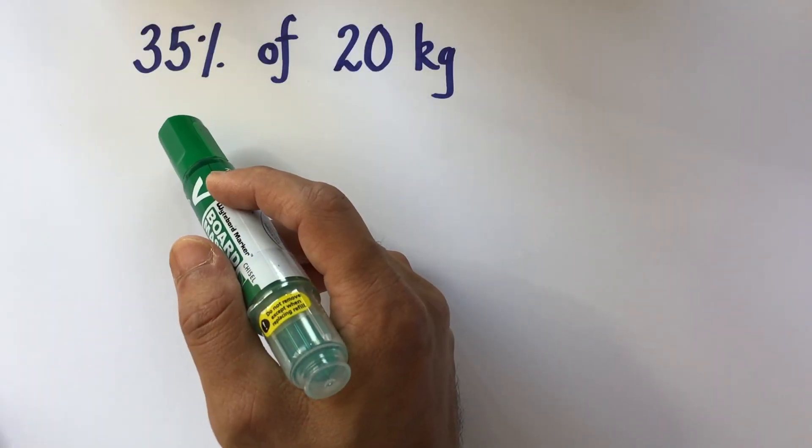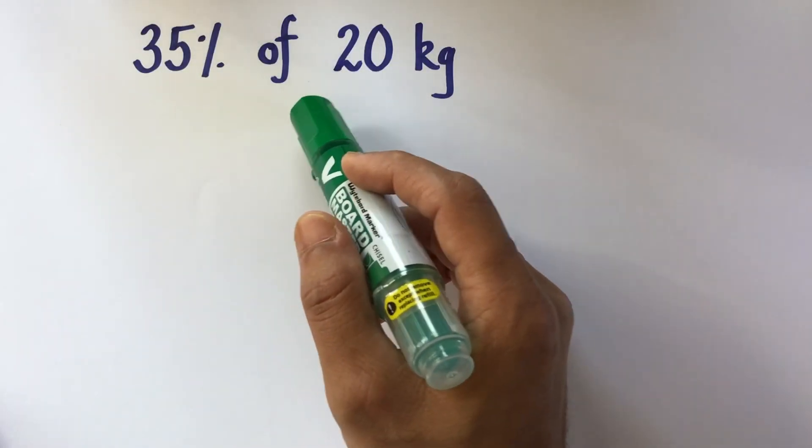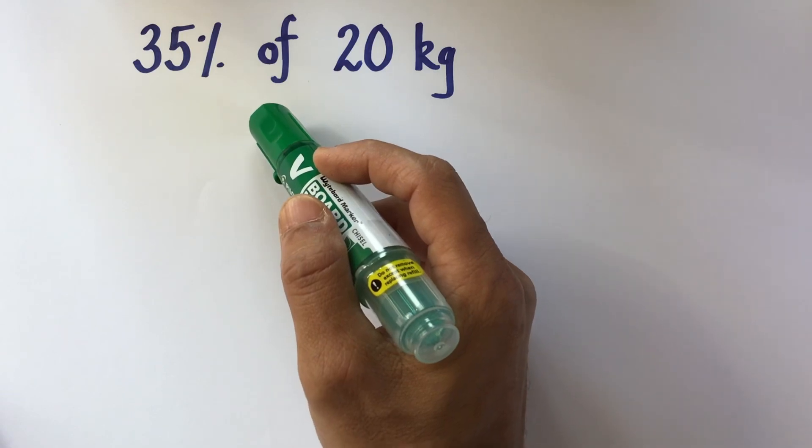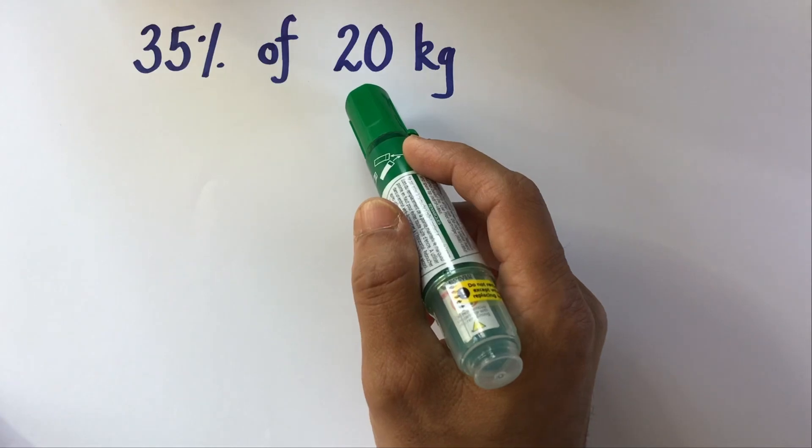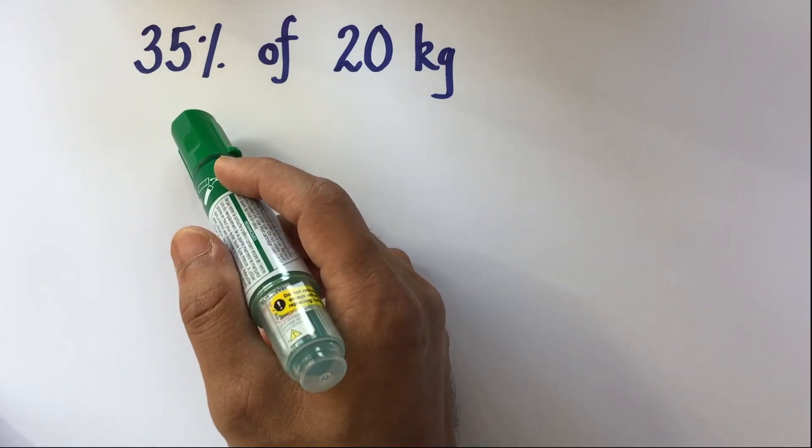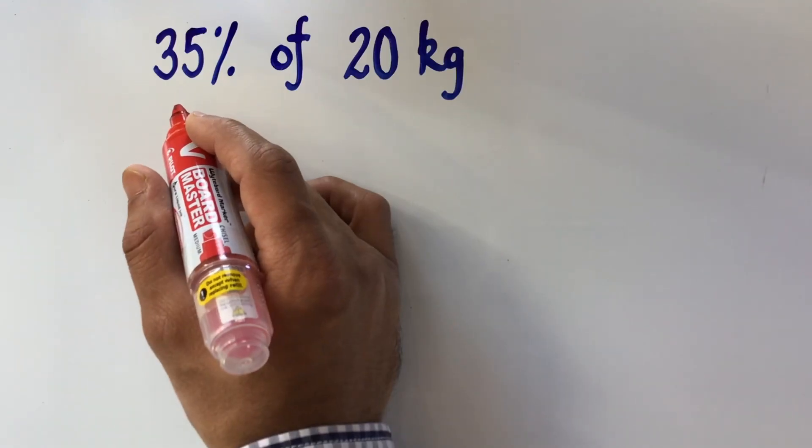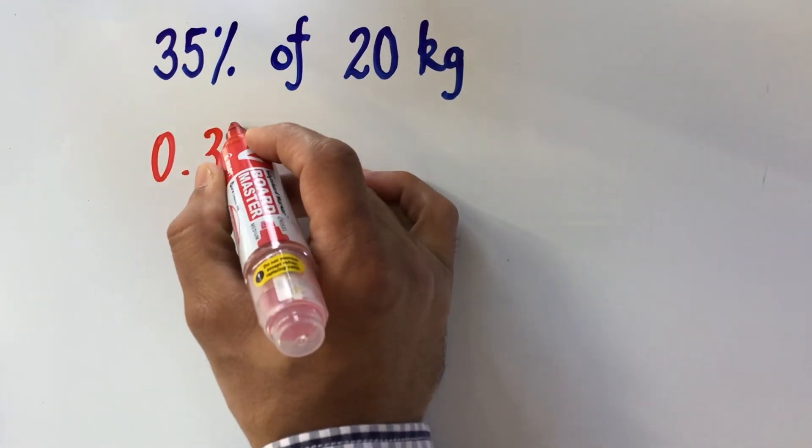Let us start with this example where we need to find 35% of 20 kgs. We need to remind ourselves that of means multiplication. Now to find 35% of 20 kg, we will first convert 35% into a decimal. When we convert 35% into a decimal, we get 0.35.